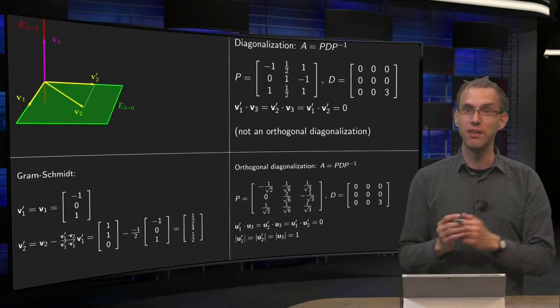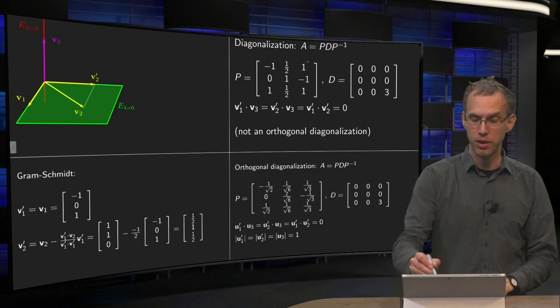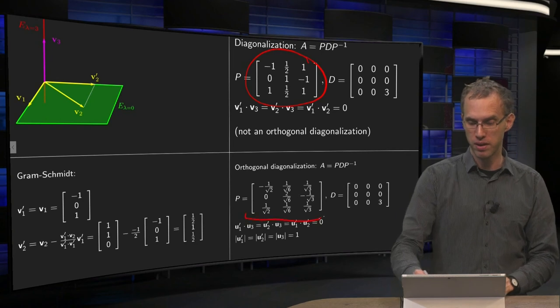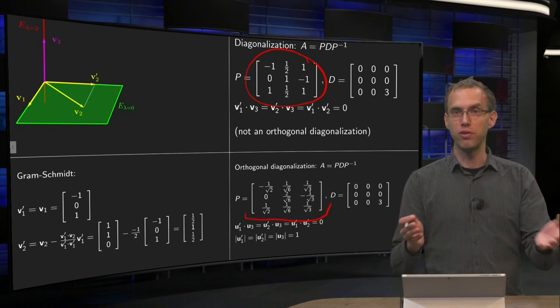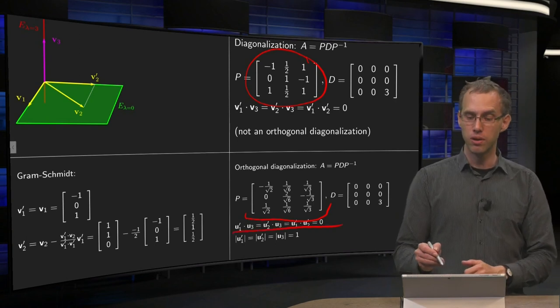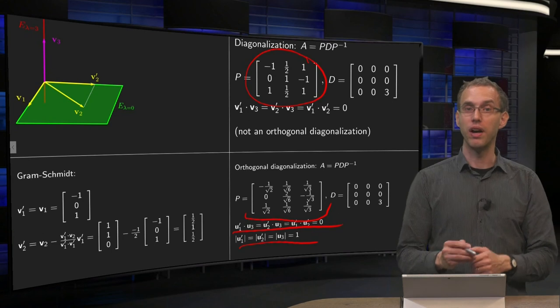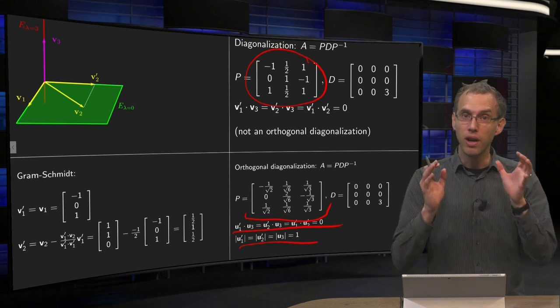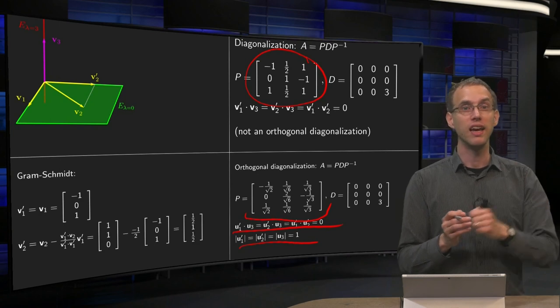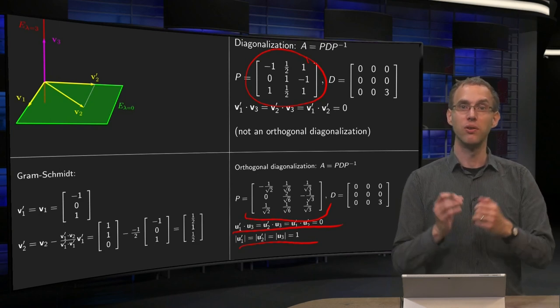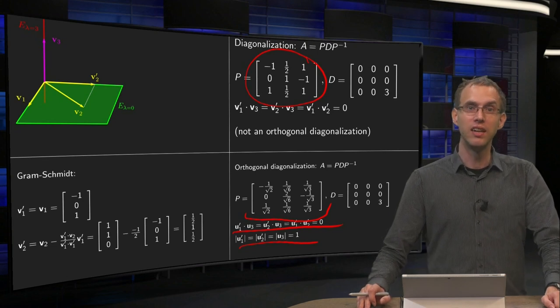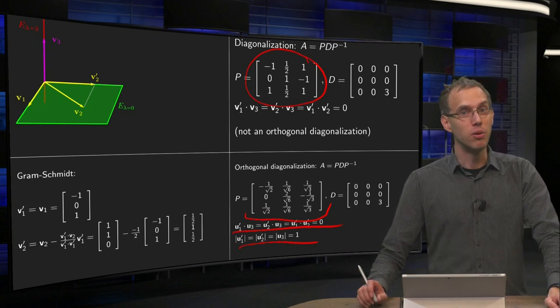Well, no problem. Finally we can find our orthogonal diagonalization by normalizing the length of those three columns, so we have our final P. Now still, of course, we are just changing the length, so they are still orthogonal. So we have orthogonal columns, and all lengths are one now, that's how we made them. So now our P is an orthogonal matrix, so we have found A equals PDP inverse, with P an orthogonal matrix. So there we have our orthogonal diagonalization of our matrix A, and as you see, this can be quite a little work.